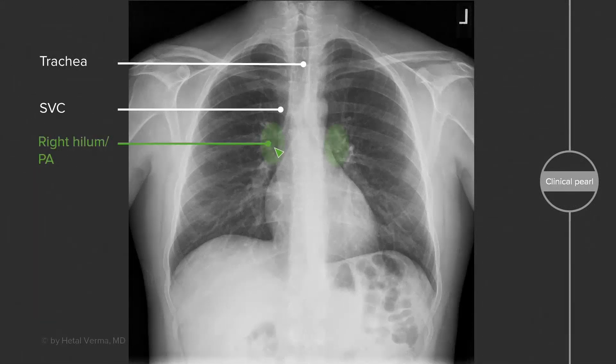We want to take a look at the hilum to look for any kind of hilar abnormalities. It's a very common place to have a mass or lymphadenopathy, and each of those green circles represents the hilum on each side. The pulmonary artery is also located in this region.